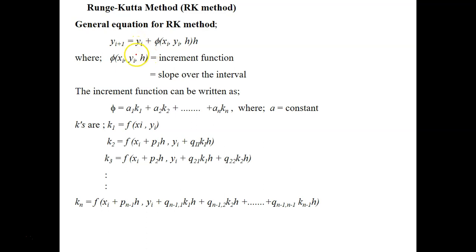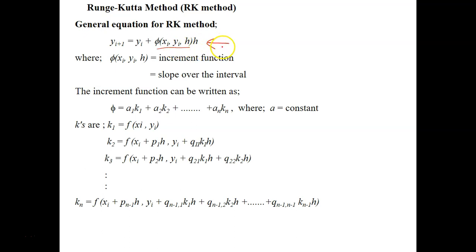This is our last video for the chapter on ODEs. We're going to look into the second order Runge-Kutta method and higher order Runge-Kutta methods. Shown here is the general equation for the Runge-Kutta method: Y(i+1) equals Y(i) plus slope. You are all familiar with this term — this is the slope or increment function, times H. The Euler method is actually known as the first order Runge-Kutta method, so in this video we're going to look into the second order and all the higher orders.